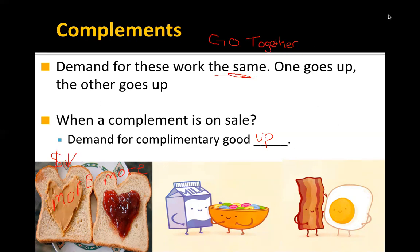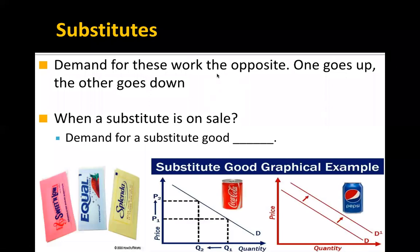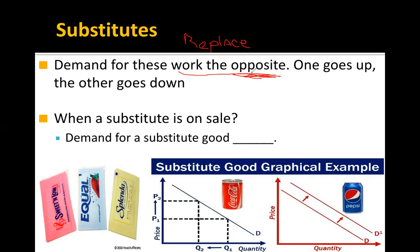Substitutes, on the other hand, work differently. Substitutes don't go together — they replace each other. Like when a rock band fires their lead singer because he's a diva, they find a substitute to come in and sing in his place. Because substitutes replace one another, demand for them works the opposite way: one goes up, the other goes down, because we don't want this one anymore but we do want the other one.